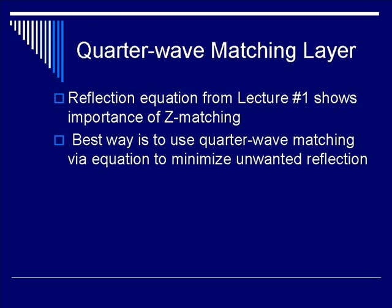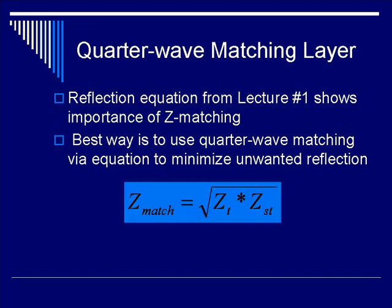The best way to minimize unwanted reflection is to use a quarter-wave matching layer via the equation as follows. Z of the matching layer equals the square root of the product of the impedance of the transducer and the impedance of the soft tissue.